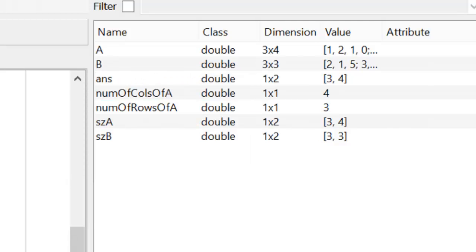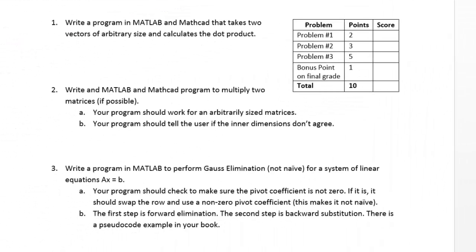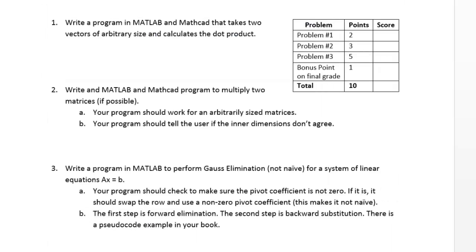I want to show you how we can swap rows. So I ask you in your homework to write a program to perform Gauss elimination — not naive — for a system of linear equations. We have three rules that we can use in Gauss elimination: we can swap rows, we can multiply rows by a scalar, and we can add and subtract rows or scalar multiples of rows to each other.